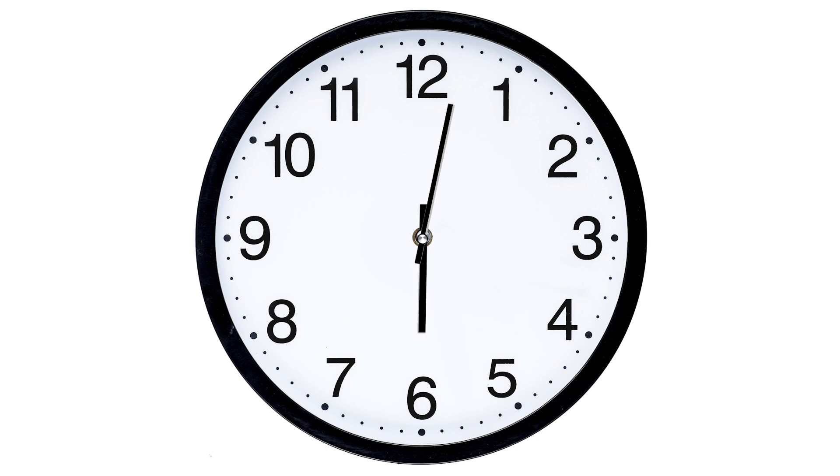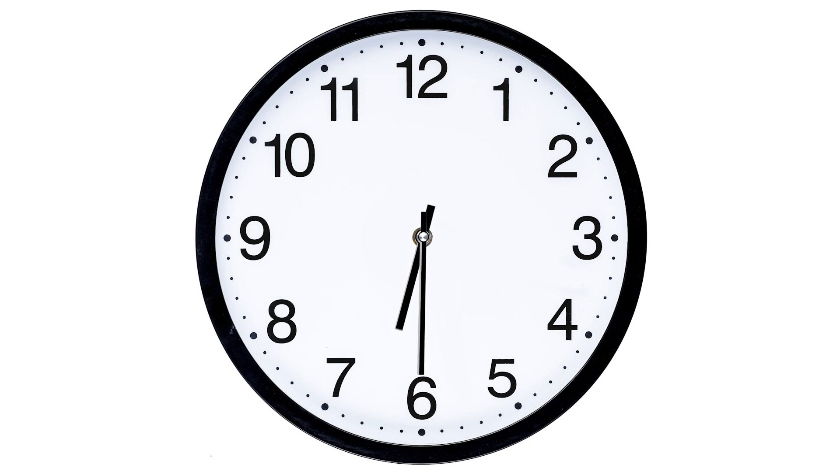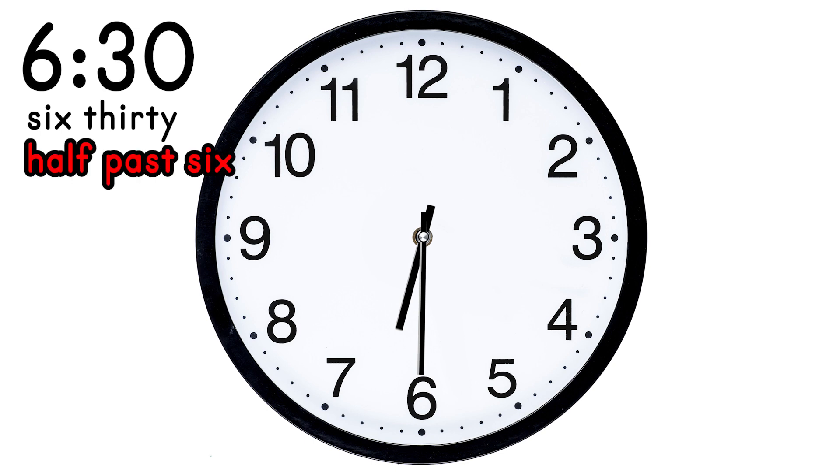Now let's turn the minute hand. The hour hand moves two and we turn it to the three and this is 15. So we can say 6:15 or we can say a quarter after six. Alright, let's turn them again. There we go. And now the hour hand is in between six and seven and the minute hand is pointing at the six. So this is 6:30 or we can say half past six. It's the same thing.